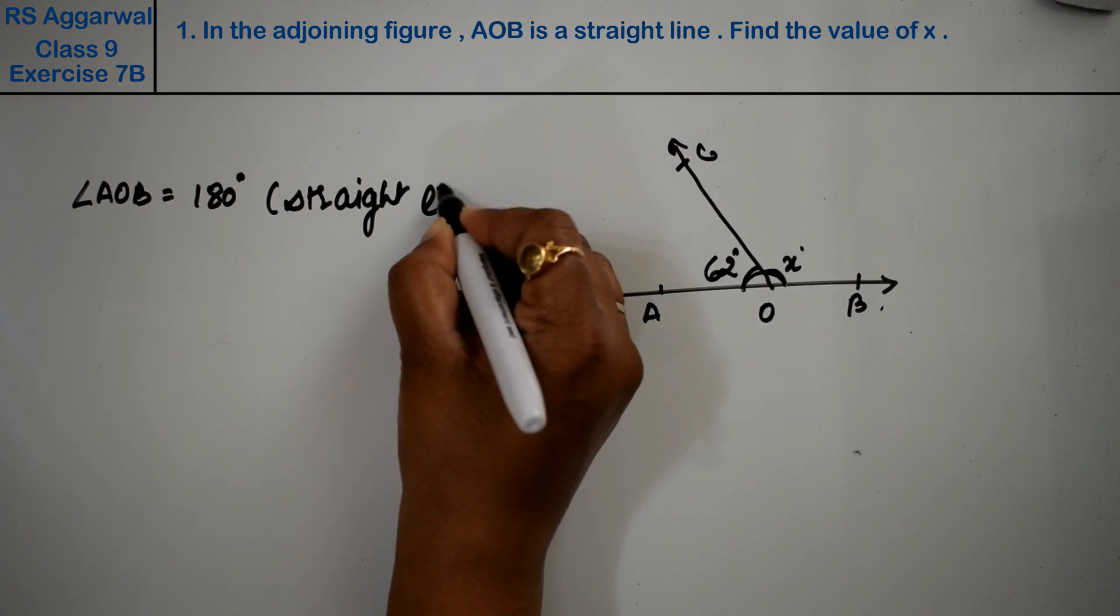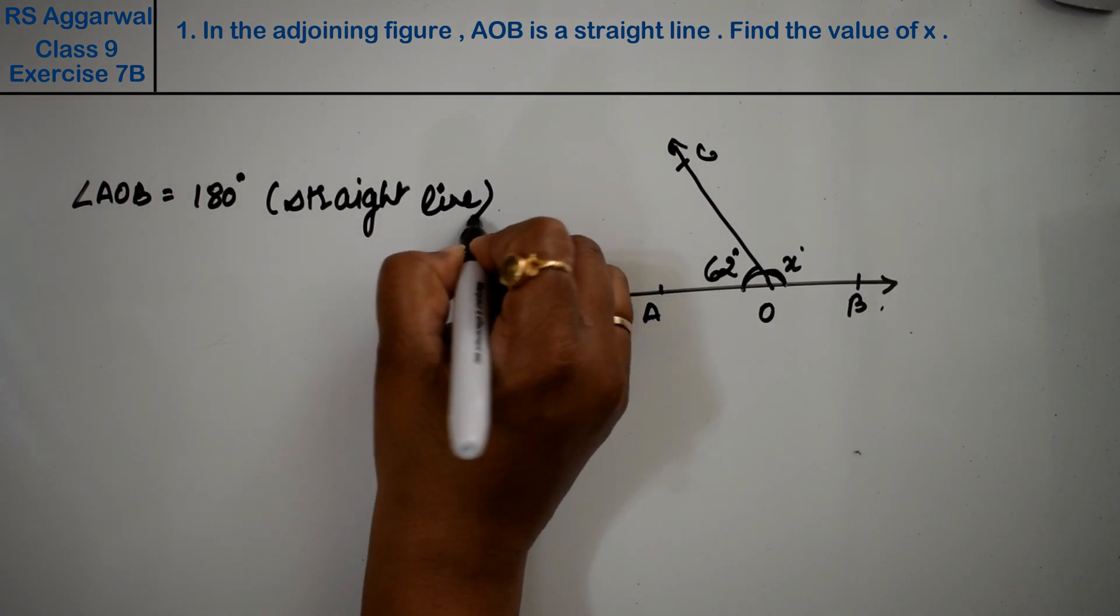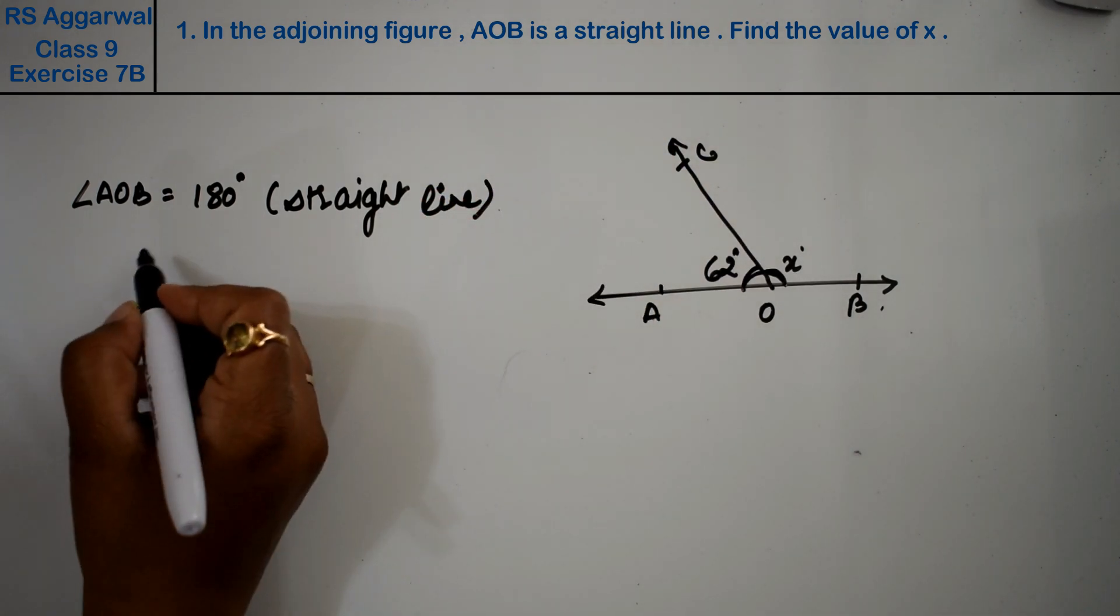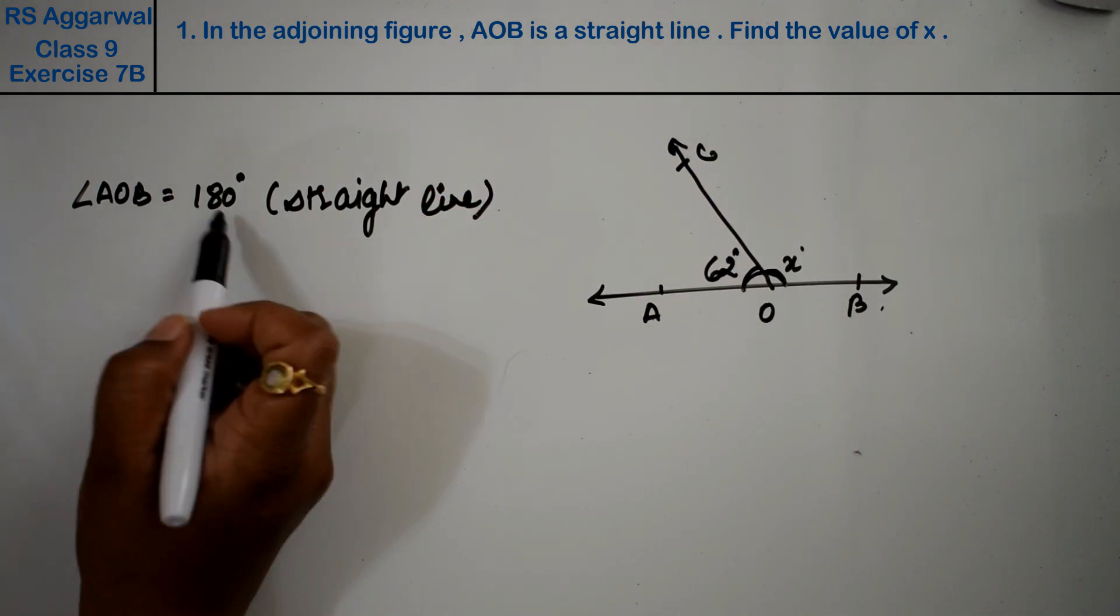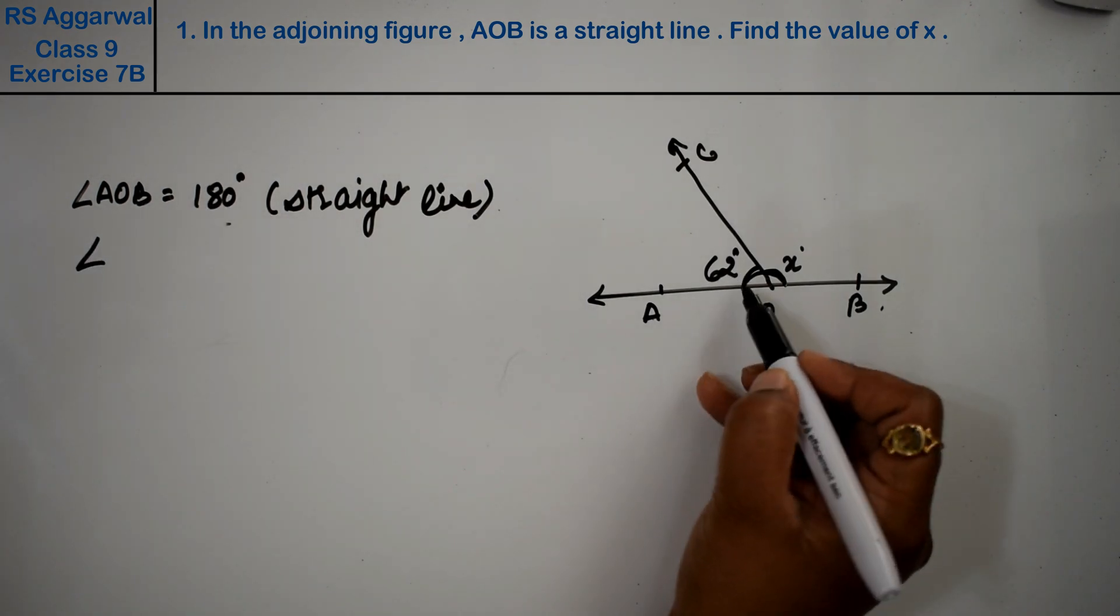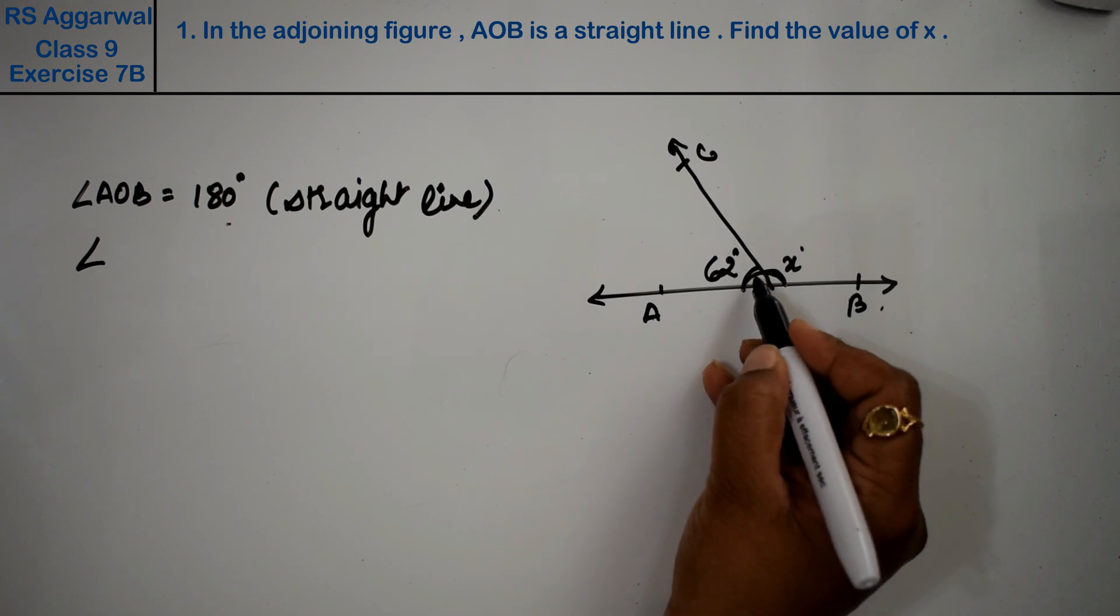We don't need to prove this straight line theorem, it's already proved. That's why it's called a postulate, right? Friends, AOB equals 180 degrees. And the angle we need to mention, we put it in the middle.